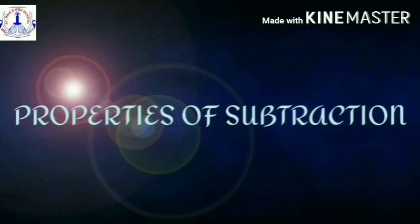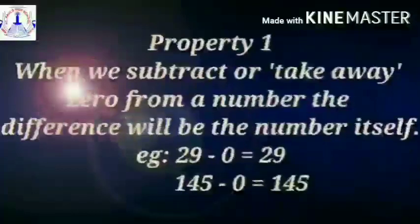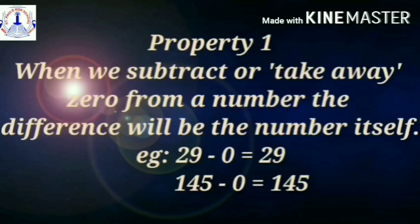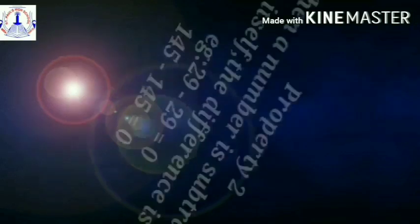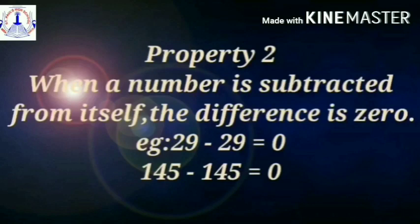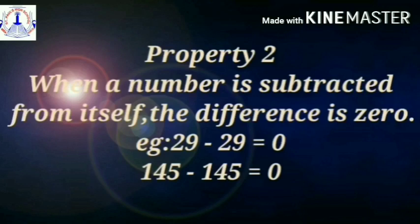Let's get started with the properties of subtraction. Property 1: When we subtract or take away 0 from a number, the difference will be the number itself. For example, if you subtract 0 from 29, your answer will be the number itself, i.e. 29. And 145 minus 0 is equal to 145. Property 2: When a number is subtracted from itself, the difference is 0. For example, if you subtract 29 from 29, your answer will be 0. And 145 minus 145 is equal to 0.